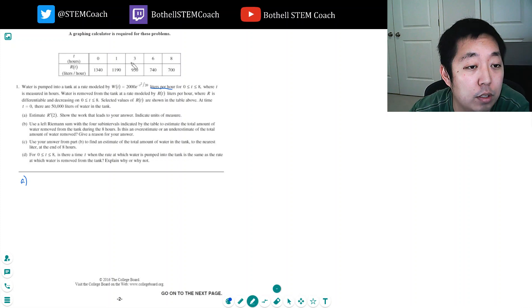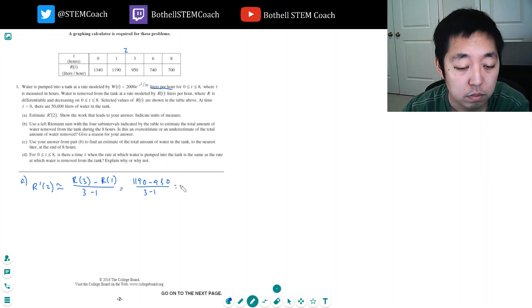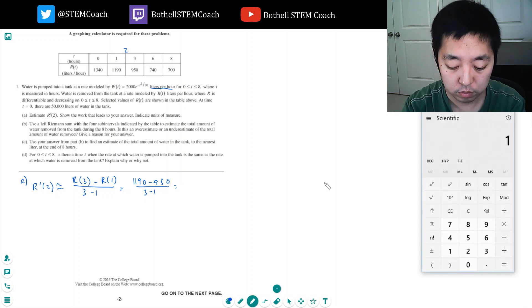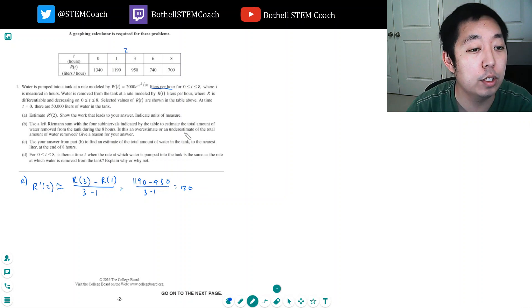Okay, the first one's pretty easy. I want to find r'(2). I'm going to estimate it. Since t=2 is between 1 and 3, I'm going to use the secant line slope. r'(2) is approximately equal to r(3) minus r(1) over 3 minus 1. This is the slope, the change in y over the change in x. That's 1190 minus 950 over 3 minus 1. I don't need a graphing calculator for this. 1190 minus 950 divided by 2 equals 120. The units are liters per hour per hour, or liters per hour squared.